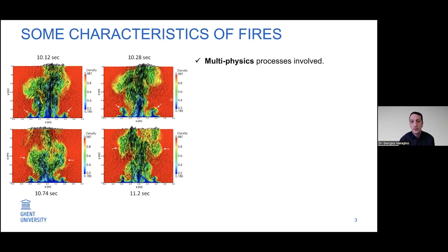When it comes to fires, we can discuss some of the characteristics involved. One obvious one is that it involves multi-physics. We don't only have turbulence, combustion, radiation, and heat transfer to model — this is only in the gas phase. If we have more complex scenarios involving sprays, pyrolysis, and flame spread, then the physical processes that need to be modeled are even more, so it can be quite challenging trying to model any given fire scenario.